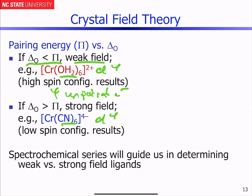And then if del O is greater than the pairing energy from a strong field ligand like cyanide, you'll get a low spin configuration. And if you remember how that actually worked, it's still D4, except now there's only two unpaired electrons.